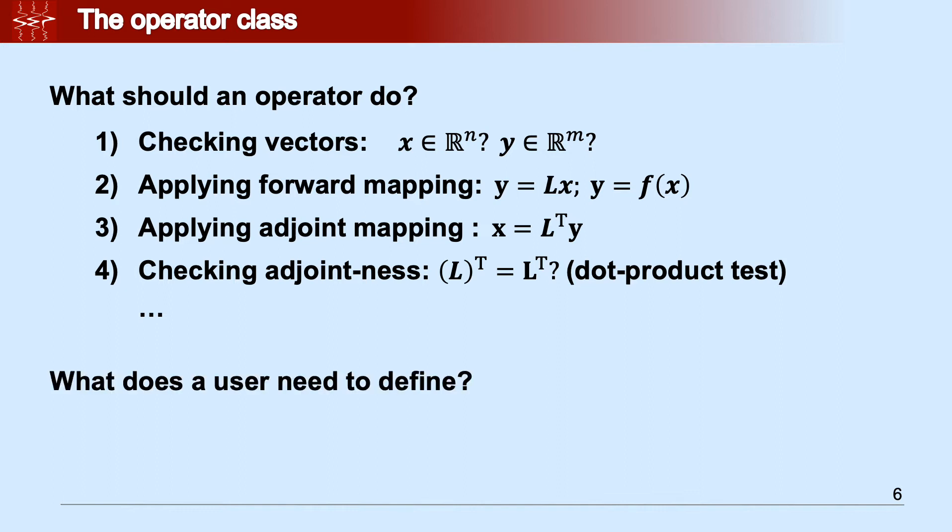And what does the user need to define? Effectively not that many things, just the constructor and the forward mapping, and adjoint in case the user needs a linear operator.